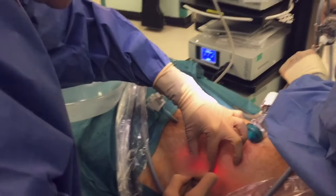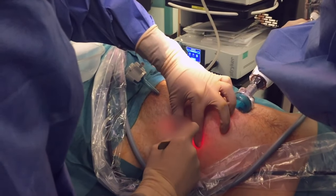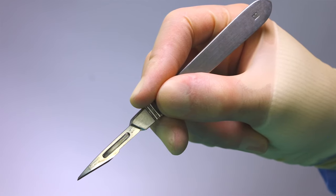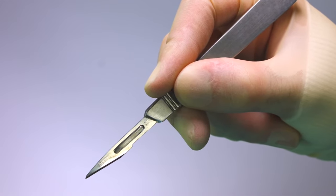When undertaking laparoscopic surgery, we need to make small incisions by which we insert the laparoscopic ports. We make these by performing stab incisions using either an 11 blade or a 15 blade.